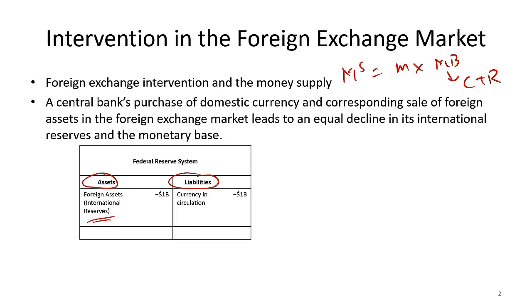Foreign currencies need to be kept because often citizens of one country travel to another country and may need foreign currencies. Now if the Fed decides to sell, say, $1 billion worth of foreign currency, currency in circulation has to go down by $1 billion on the liabilities side. Essentially, they sell these currencies, people pay them in US dollars, and the Fed keeps that dollar in their vault so that currency vanishes from circulation. When currency in circulation decreases, that means a decrease in monetary base, and if monetary base decreases, money supply also decreases.